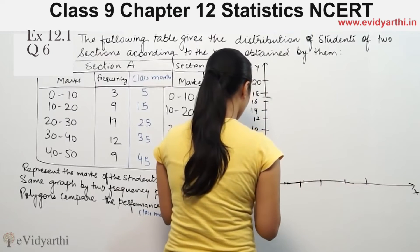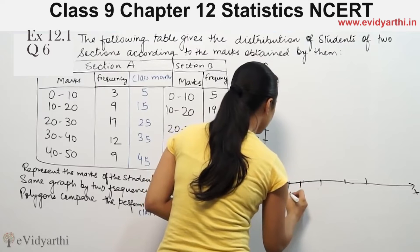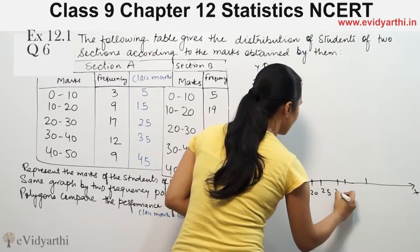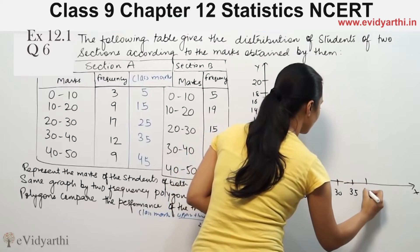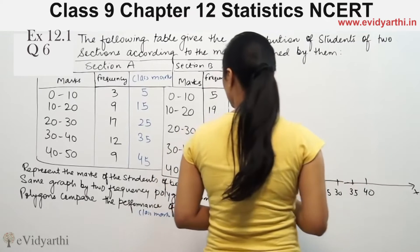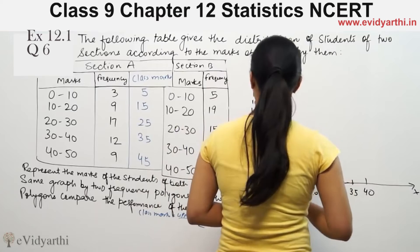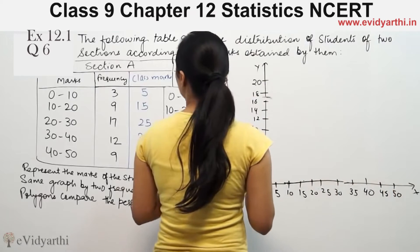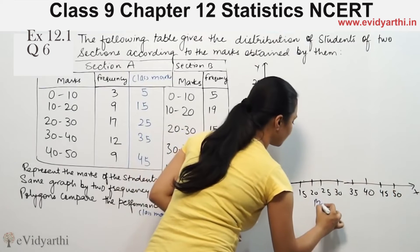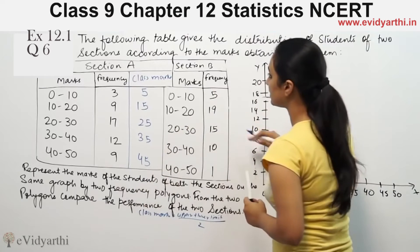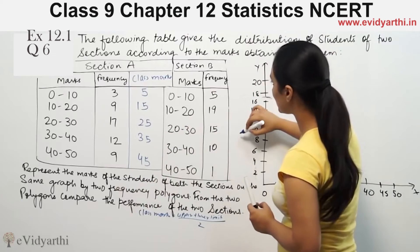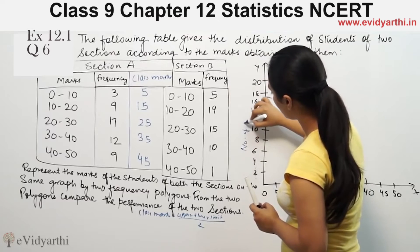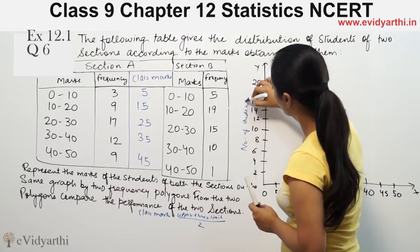Now I'll mark the x-axis values: 5, this is 10, 15, 20, 25, 30, 35, 40, 45, 50. These are the marks. And this is the frequency - the number of students. This is the number of students axis.